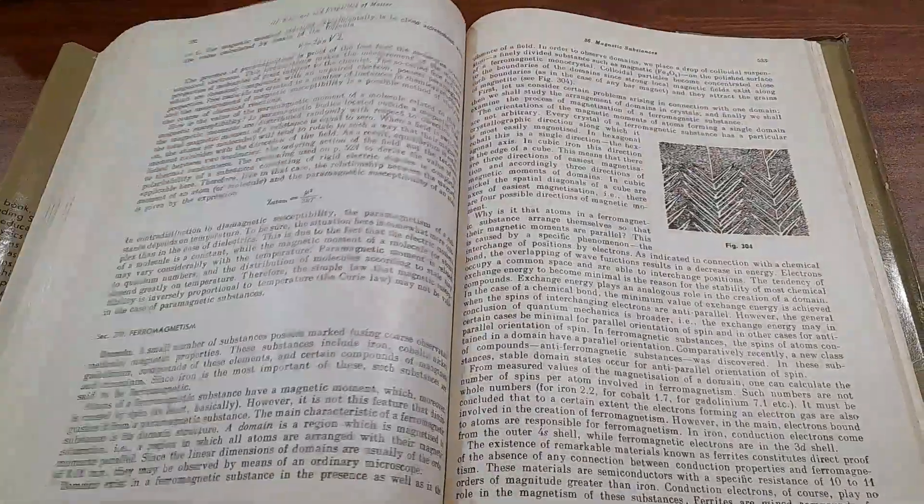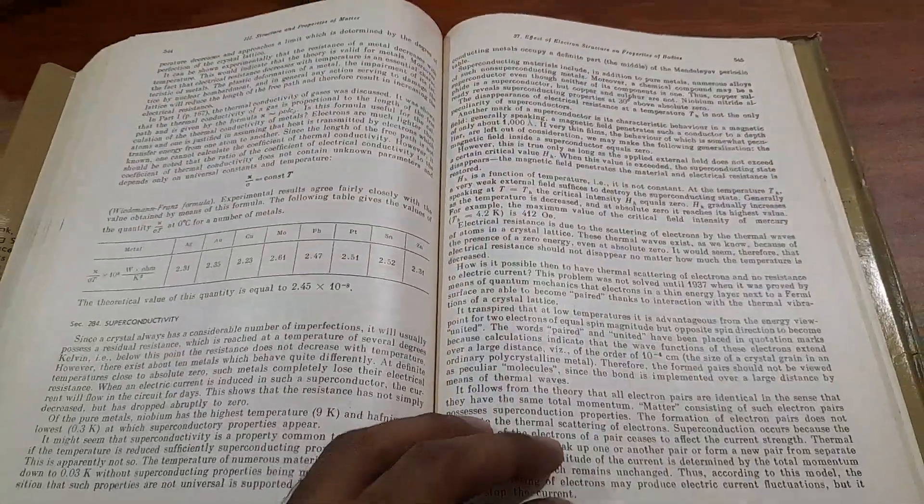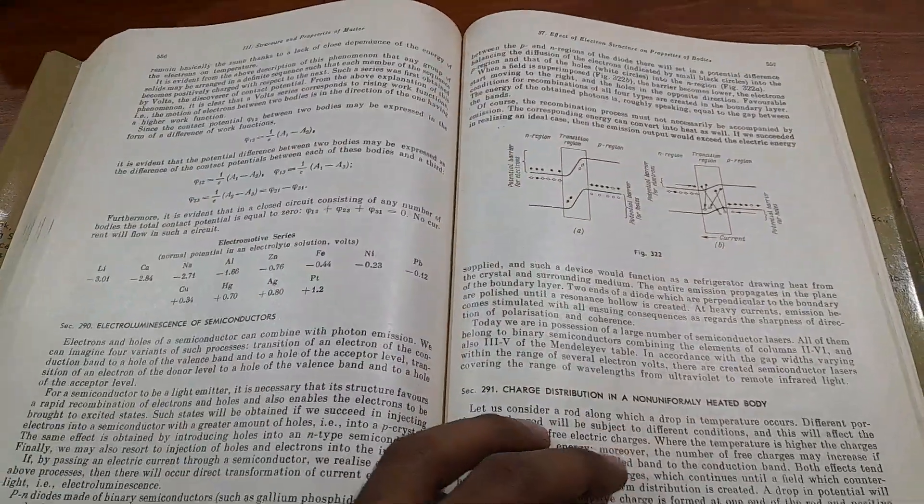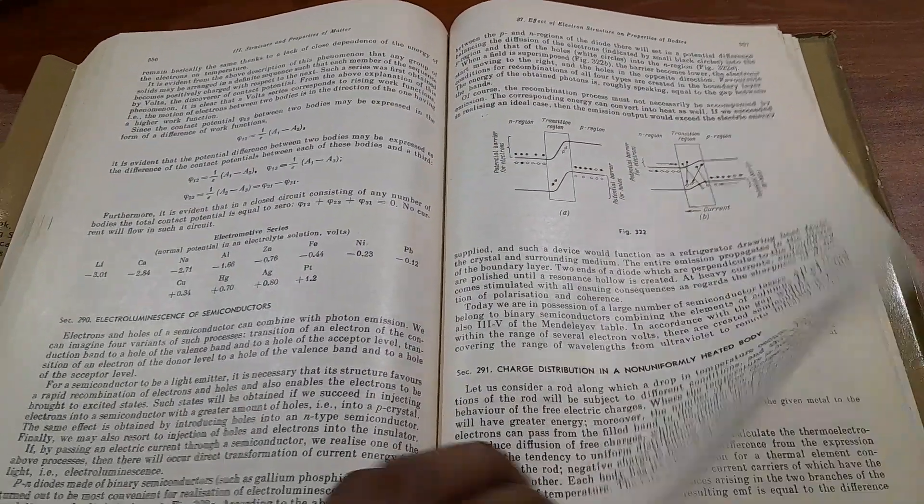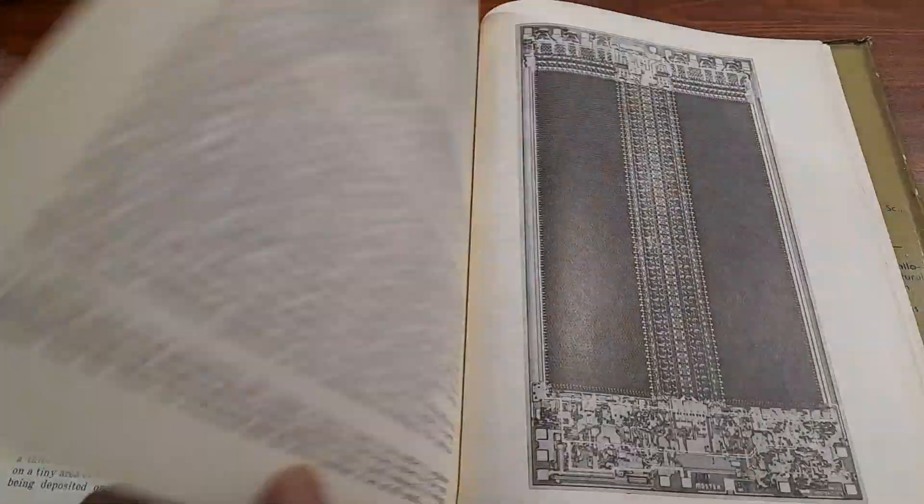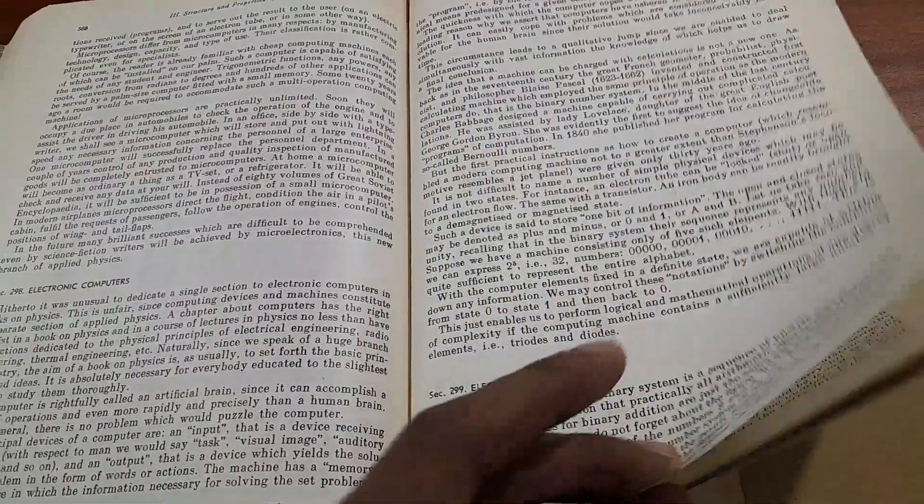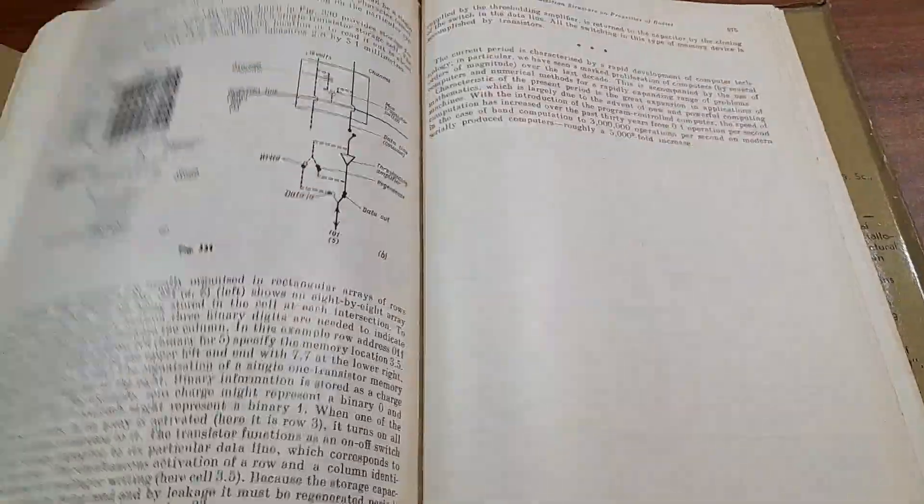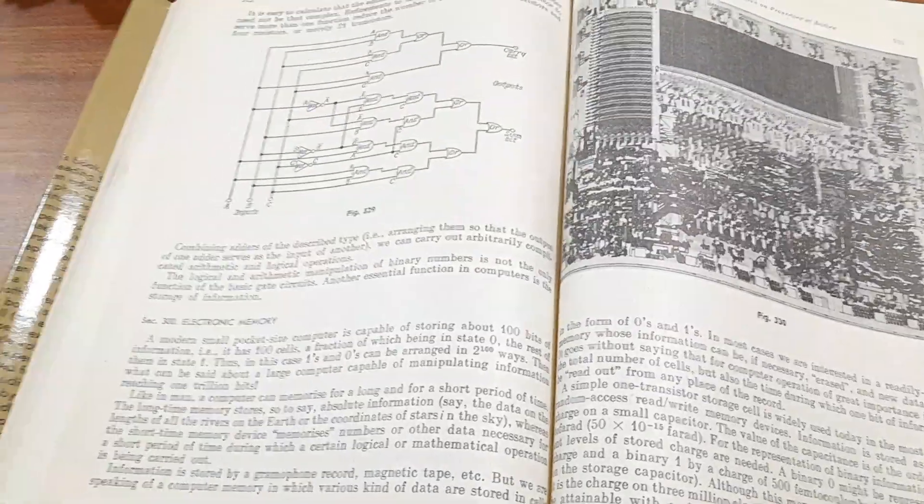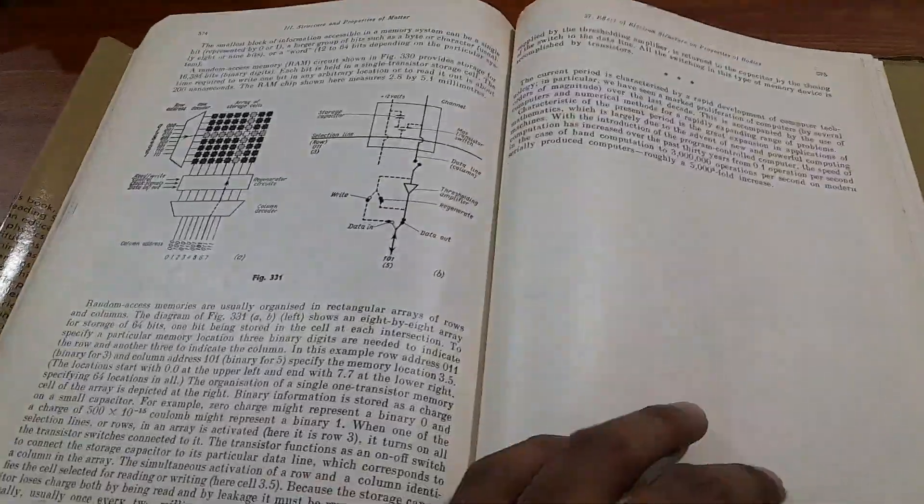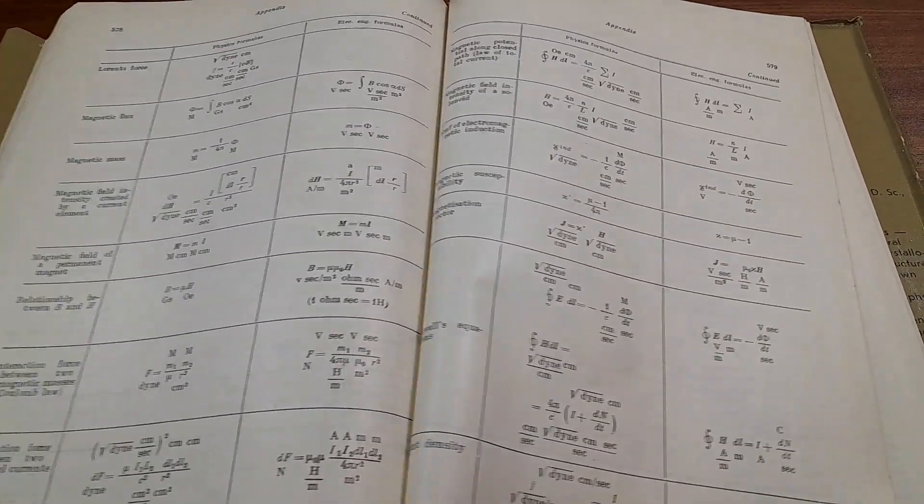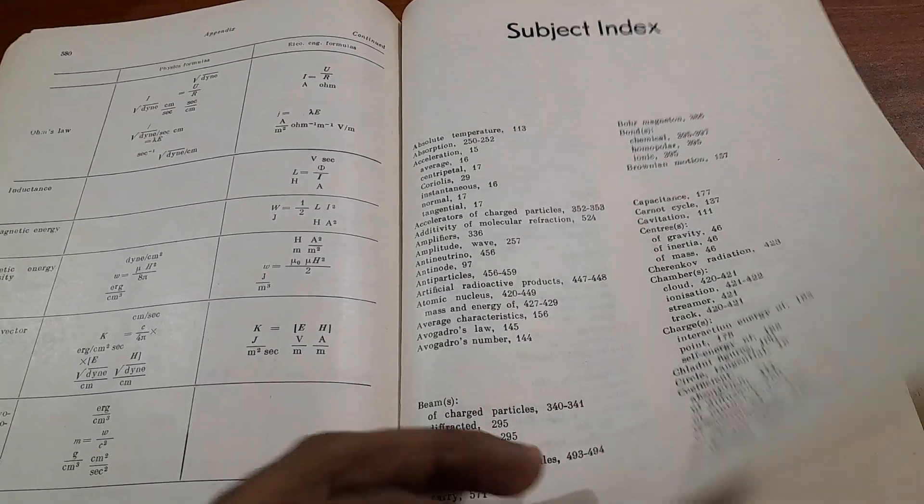We are in the last few pages. Charge distribution and non-uniformly heated body, technology of manufacturing microelectronics circuits, applications of quantum mechanics, electronic computer, electronic arithmetic. Finally, the last topic is electronic memory. Pictures and diagrams are given. That's what makes this book beautiful. In the appendix they have given all the equations, then the subject index.